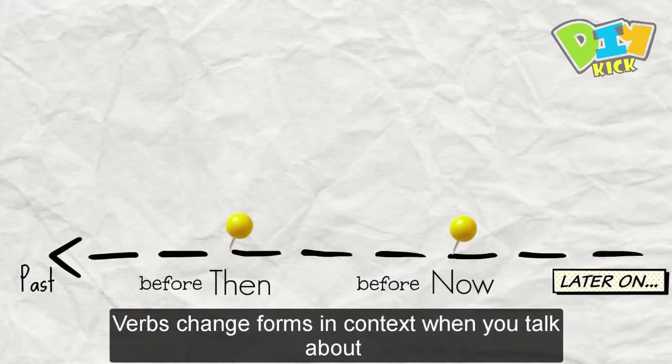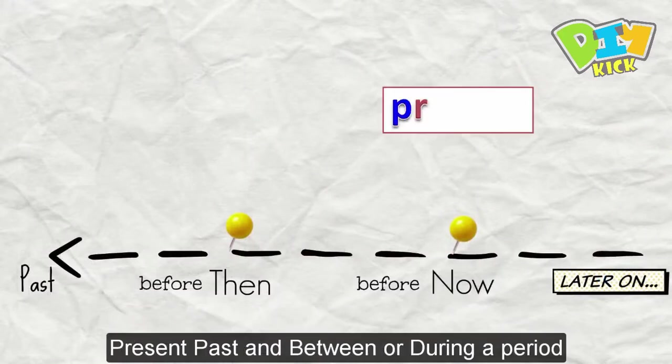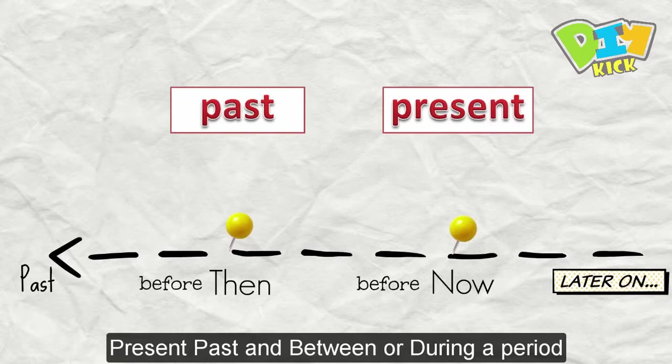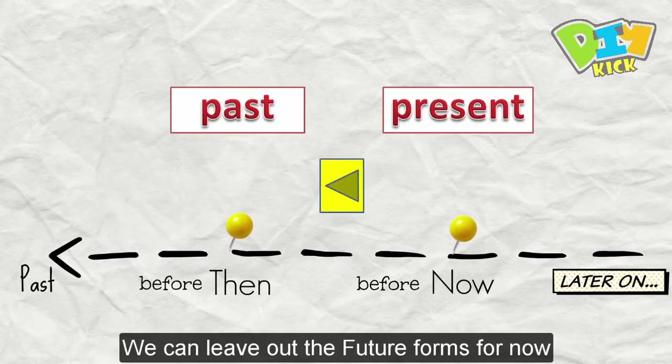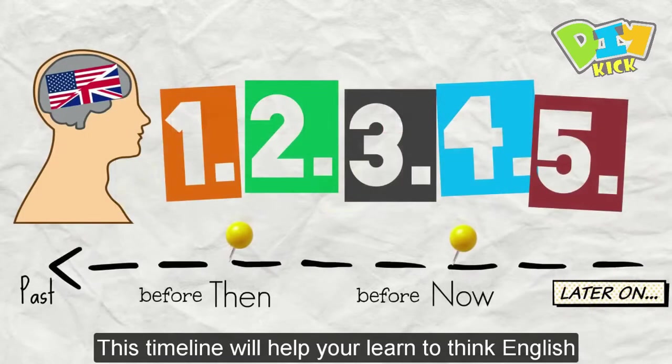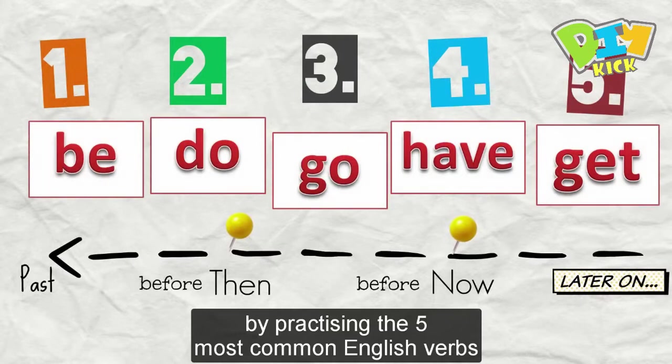Verbs change forms in context when you talk about present, past, and between or during a period of time. We can leave out the future forms for now. This timeline will help you learn to think English by practicing the five most common English verbs.